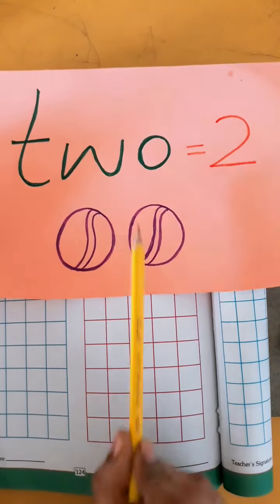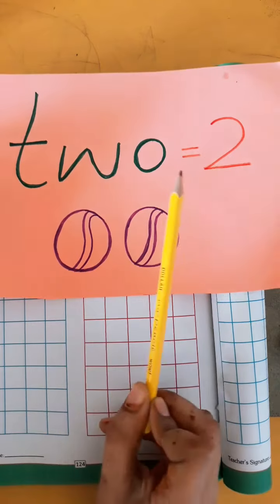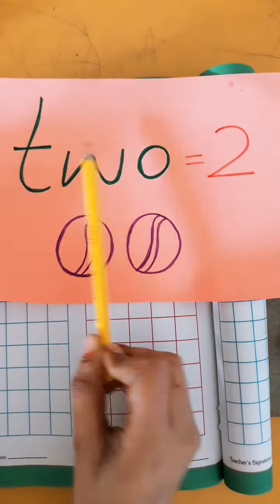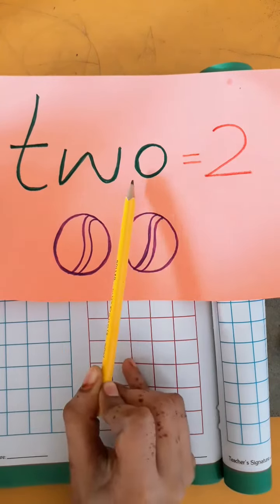Students, look here. T-W-O, 2. This is the spelling of 2. T-W-O, 2.